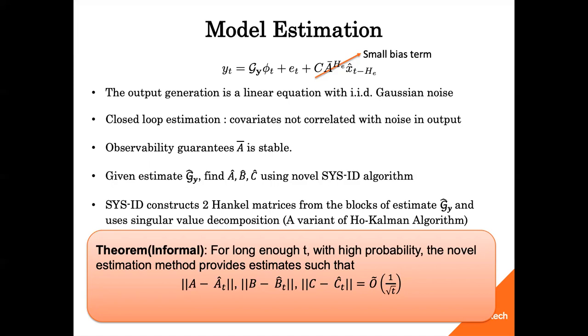We have the following guarantee for the proposed model estimation method. The estimation error decays with 1 over square root T rate. Notice that this system identification algorithm does not depend on how the data is collected and can handle both open-loop and closed-loop data collection, which makes it possible to update the system parameter estimates while controlling the system.